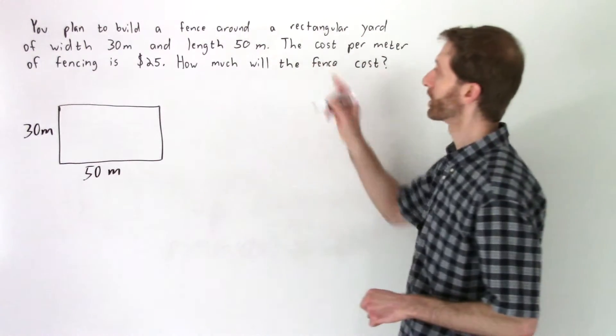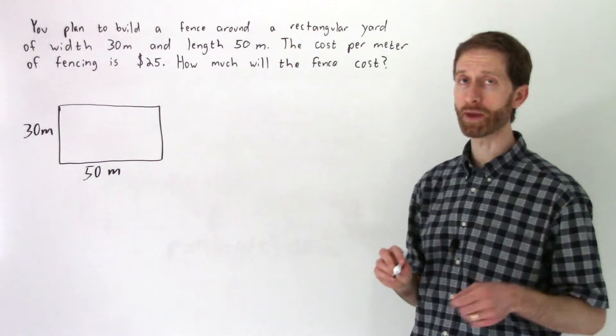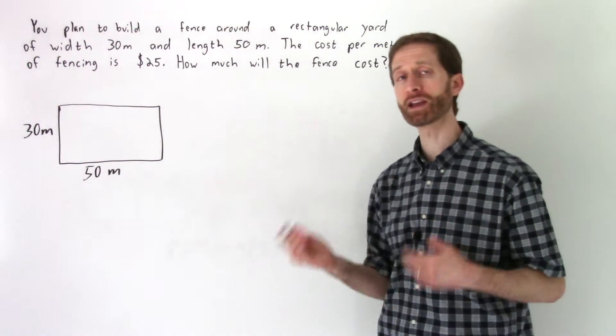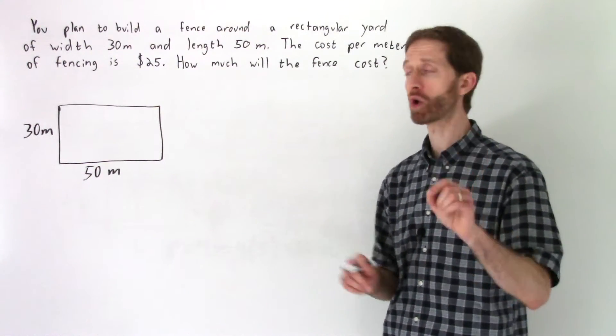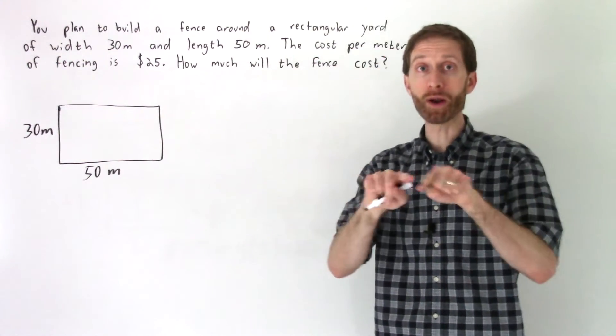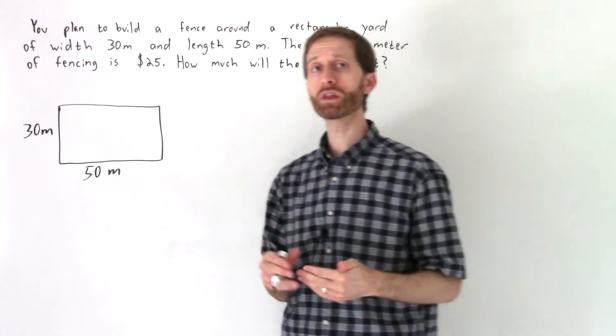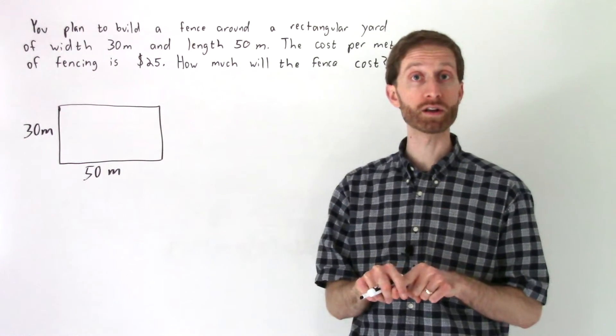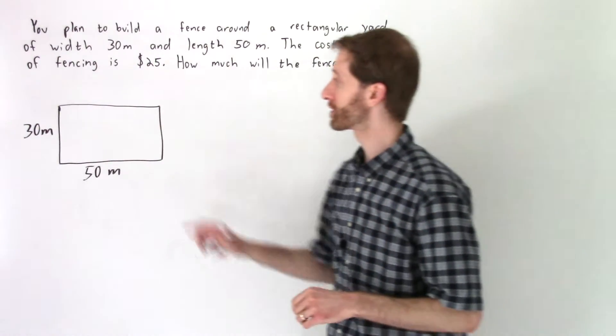Let's keep reading now that we have that translated. The cost per meter of fencing is $25. How much will the fence cost? Well we're not directly asked for any kind of dimension here but the cost is $25 per meter and that's called a linear meter. Everything with this cost has to do with how much total fencing goes around the yard. So let me find the perimeter and then let's see what to do with that.